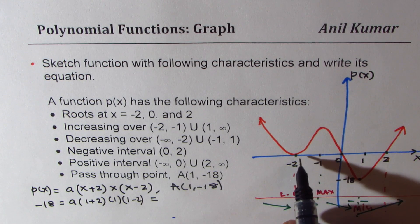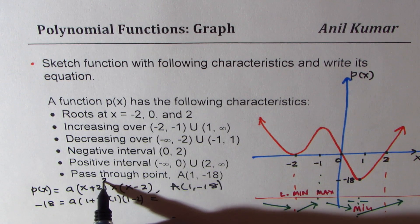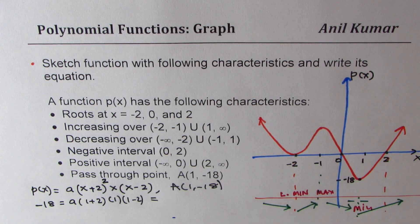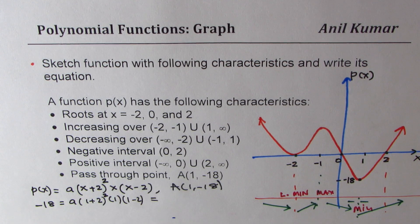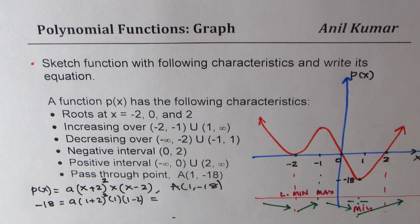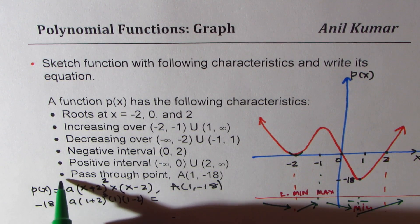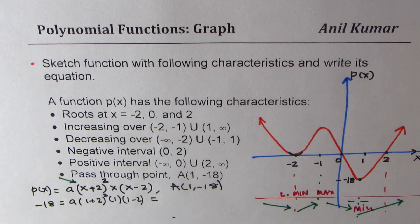So because this is turning here at minus 2, it should be squared. Those are linear zeros, but we have a quadratic zero here. So this should be squared. I hope that makes sense. Since we have a turning point here, so this should be squared.